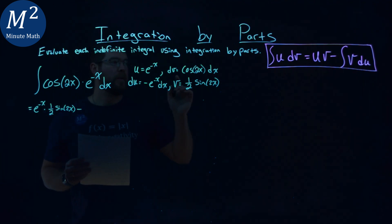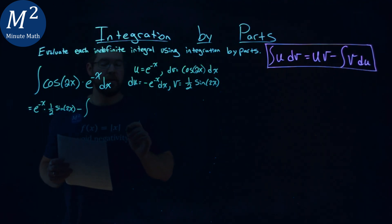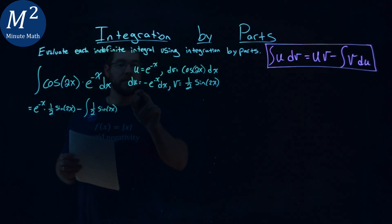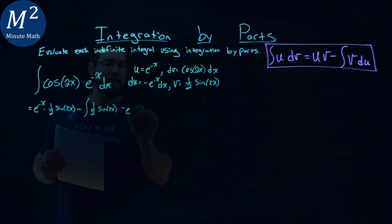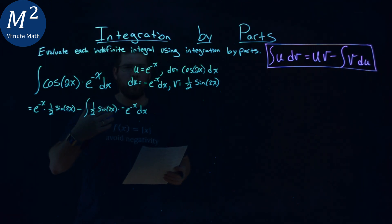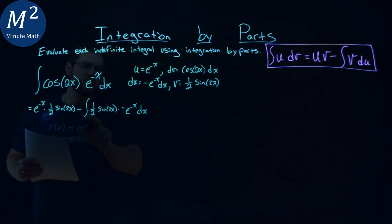Minus the integral of my v value, which again, that one-half sine of 2x, times my du value, negative e to the negative x dx. I see another integral here, and it almost looks more difficult. But let's pull out what we can and see what we can do.